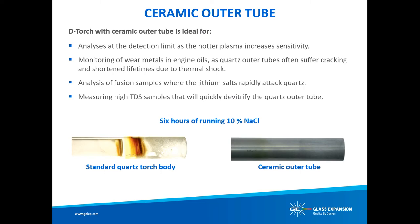The DeTorch is available for several different ICP models — check availability at www.geicp.com/detorch. Also unique to the DeTorch is the optional ceramic outer tube, which is of particular benefit for high-TDS sample matrices because the ceramic material does not de-vitrify like quartz. Using a ceramic outer tube produces a hotter, more robust plasma, reducing matrix effects and improving detection limits. Compared to a quartz outer tube, the ceramic has a much longer lifetime, greatly reducing maintenance, cleaning, and downtime. In some sample matrices, quartz outer tubes can degrade in hours, while the ceramic will last years under the same conditions.